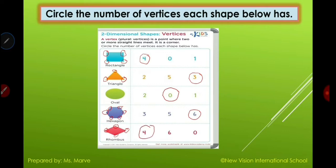Now we have rhombus. Let's count: one, two, three, four. What is the answer — is it four, six, or zero? Of course it is four. If you have the same answer as me, you can clap your hands!